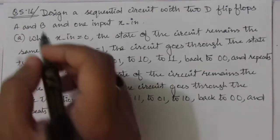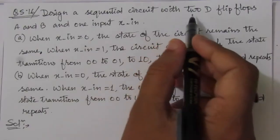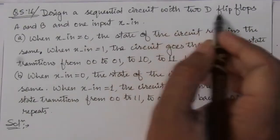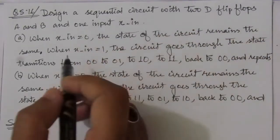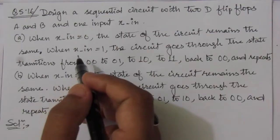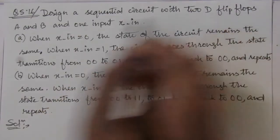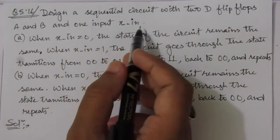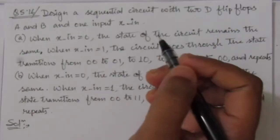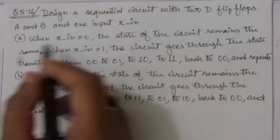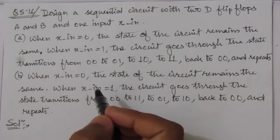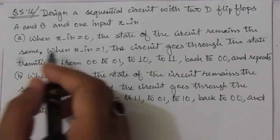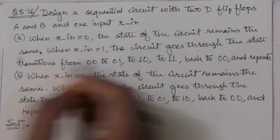The problem is: design a sequential circuit with two D flip-flops. We have to use two D flip-flops, A and B, and it has one input X_in. We are given with two conditions, meaning we will have two sequential circuits following these two conditions.